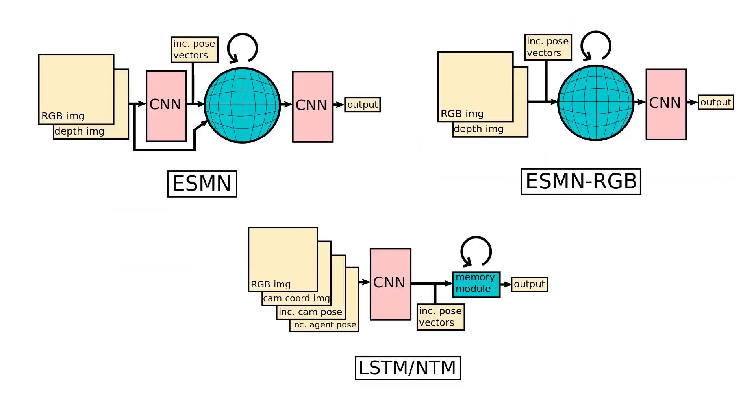In all cases, we find that ESMN and ESMN RGB outperform less-structured memory baselines, such as long-short-term memory and neural Turing machines. The baseline methods are given access to all the same information, including ground-truth poses.